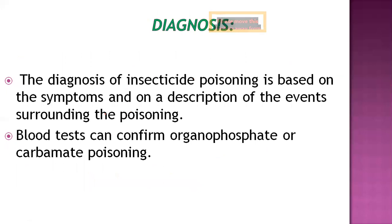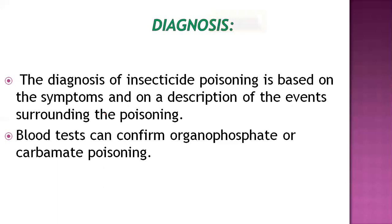For pesticide poisoning from organophosphates and carbamates, diagnosis is based on symptoms first. We have to observe whether the person has really been harmed through the pesticide, based on surrounding events. If symptoms occur, immediately suggest the person see a doctor for proper treatment. Through medical observation, a blood test can confirm whether it is organophosphate or carbamate poisoning.